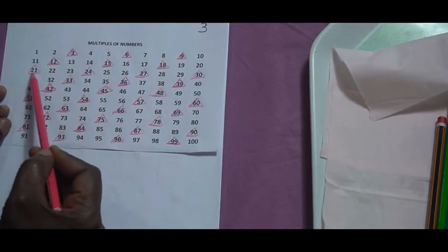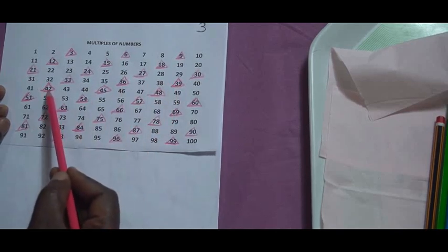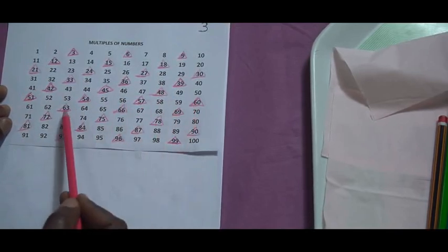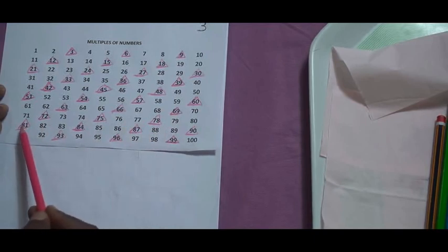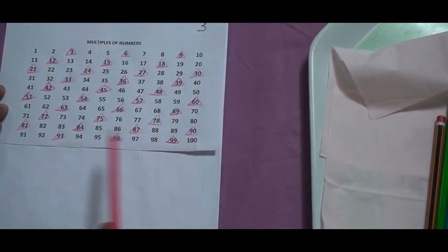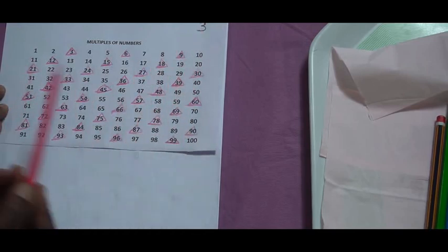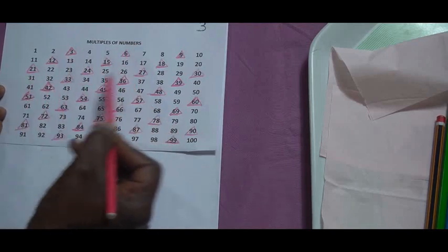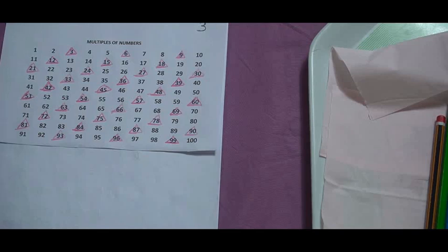15, 18, 21, 24, 27, 60, 63, 66, 69, 72, 75, 78, 81, 84, 87, 90, 93, 96, 99. These are the multiples of 3, the multiples of 3 from 1 to 100. You can see there is a pattern here. See the pattern, like diagonal. All the numbers are in a diagonal.